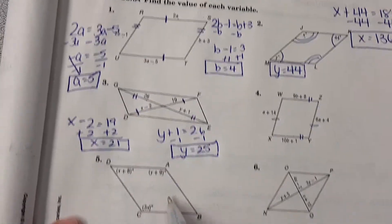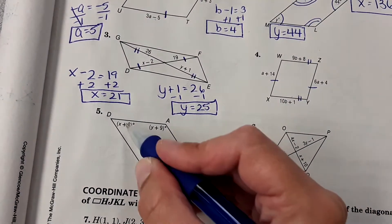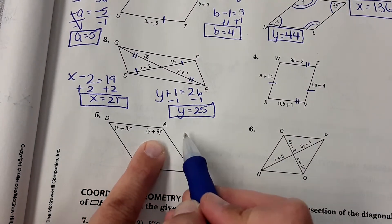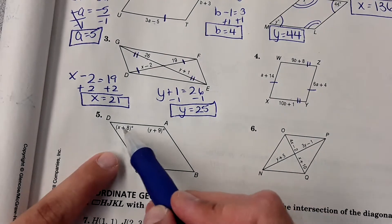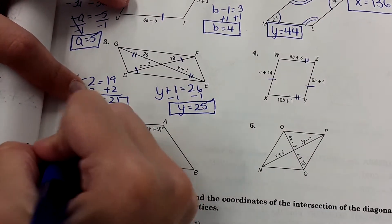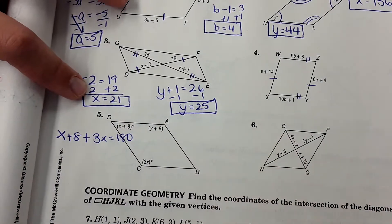Number five. This one you are dealing with consecutive angles being supplementary, so I could say x plus 8 plus y plus 9 equals 180, but I can't solve for two variables at one time. So in this case, I'm going to do these two angles first. I want to say x plus 8 plus 3x equals 180 and solve for x first.